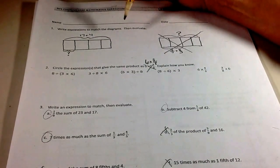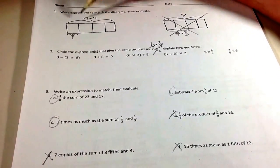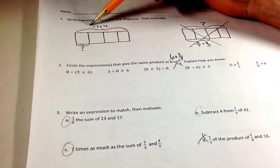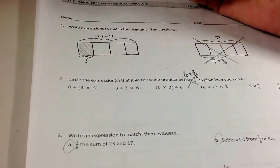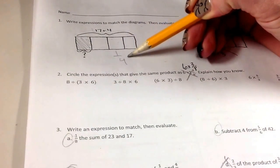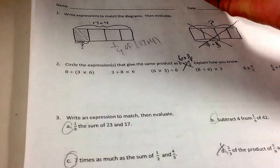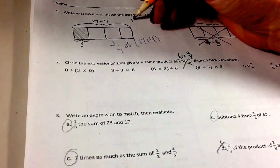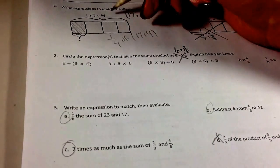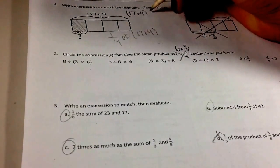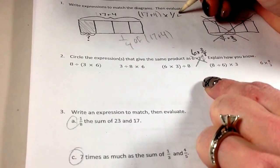It deals with expressions and understanding the order of operations. So it says write an expression to match the diagram. I didn't have them do this one. They are going to have them do this. So if I wanted to figure this out, obviously the first thing I'd have to do, because I know that this part, that the question mark is shaded, is one-fourth of 17 plus 4. So I know 17 plus 4 has got to be in parentheses, because I'd have to do that first. And then because it's one-fourth of, I'm multiplying it by one-fourth.